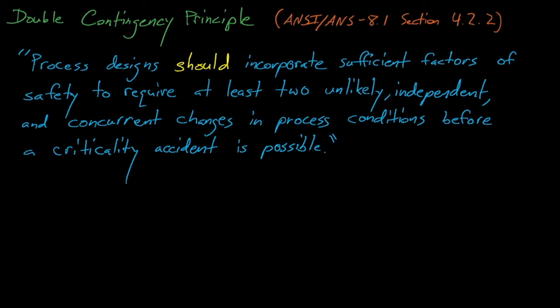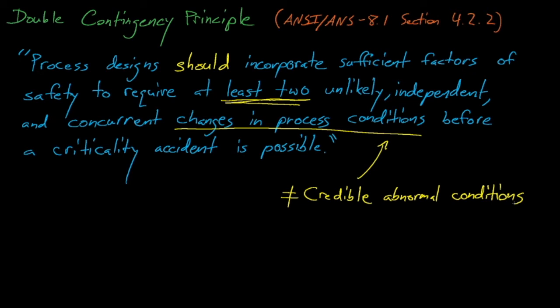However, some operations are not flexible enough to comply with the double contingency principle, but can incorporate enough margin and training to protect against the one change in process conditions that can lead to a supercritical configuration. It's also worth noting that the double contingency principle states that we must protect against two independent changes to process conditions. This is important because one credible abnormal condition can cause multiple correlated changes to process conditions.